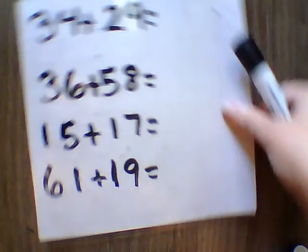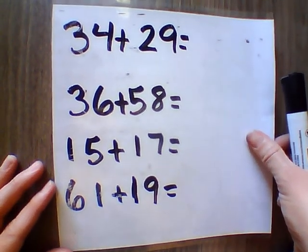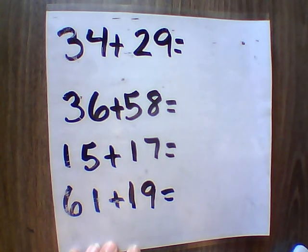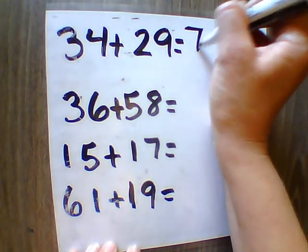All right. Here are our equations for today. So pause the video and do those now. Go! All right. So I'm just going to review them now. But you should have worked them out either the long way or the short way. So 34 plus 29 equals 73.